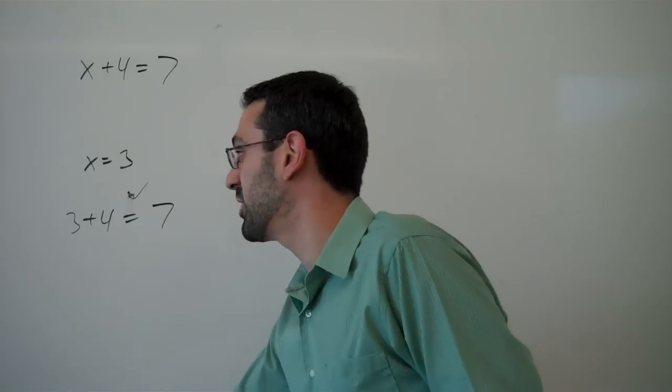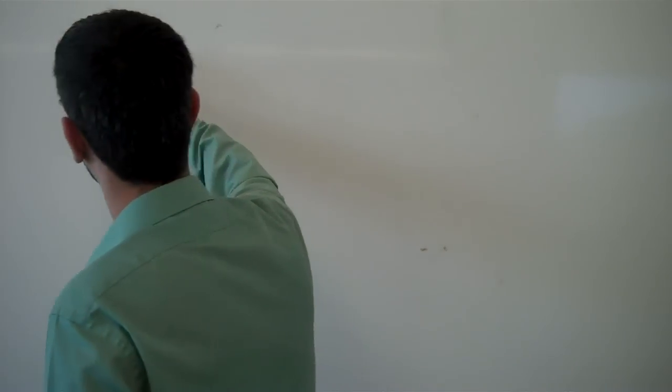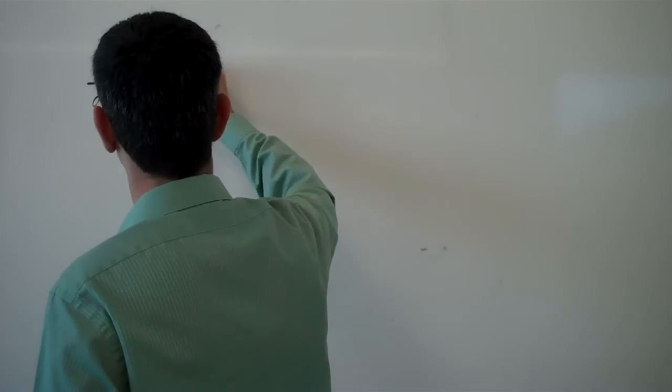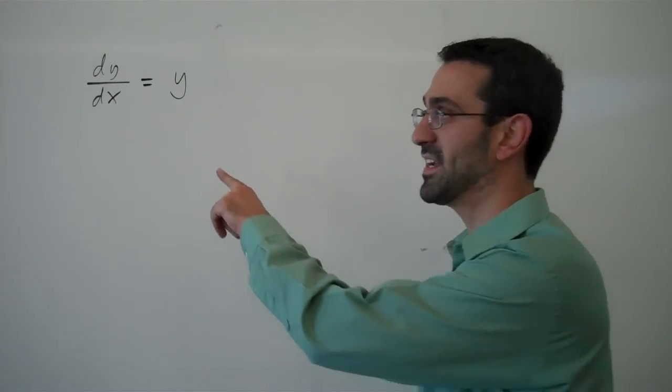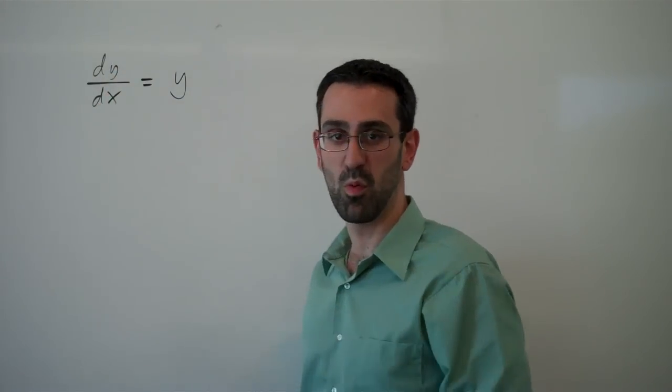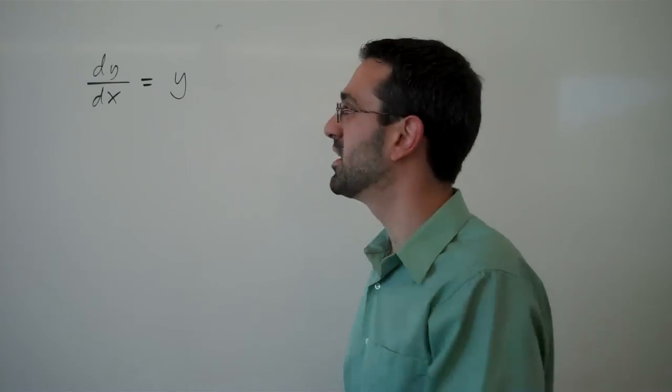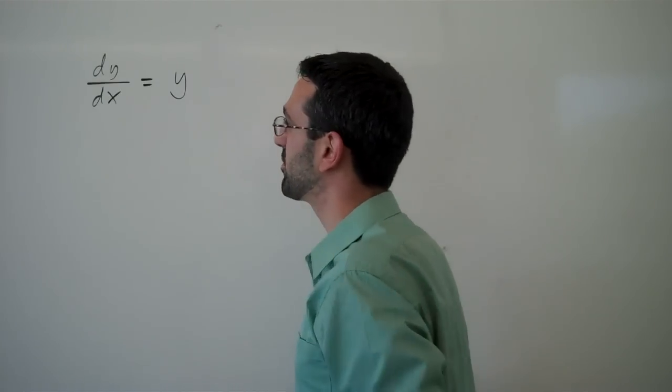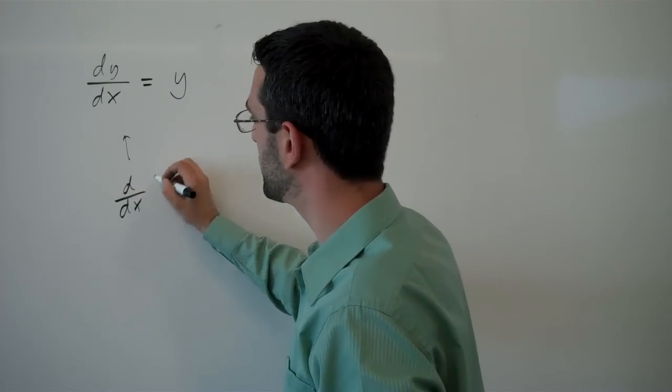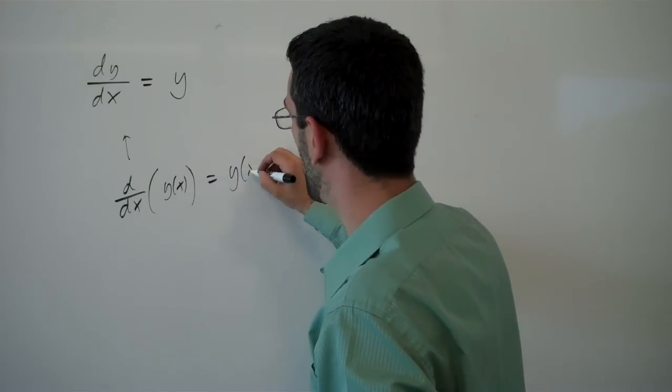That's an algebraic equation. A differential equation looks something like this: dy/dx = y. Notice that in this equation, we have the derivative of some y, which, since we're taking the derivative of it, we have to assume it's a function. So, even though we're not writing it with function notation, we're really imagining here that we're talking about the derivative of some y(x) function is equal to y(x).